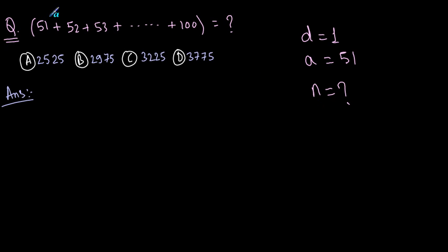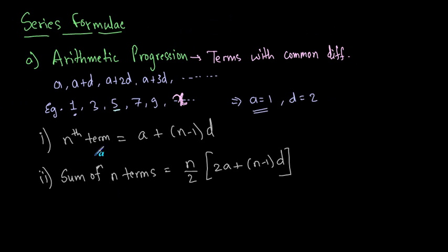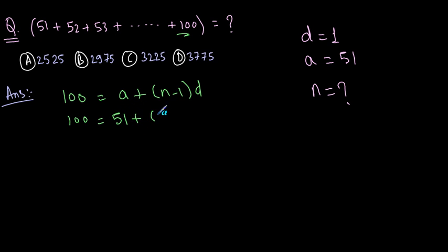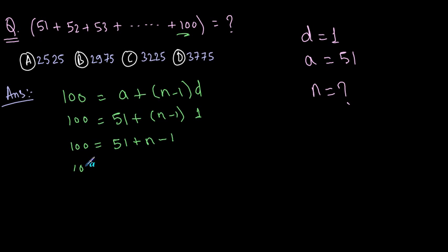To calculate how many terms are in this series, use the nth term formula: nth term equals a plus (n minus 1) times d. The nth term — the last term — is 100. So: 100 equals 51 plus (n minus 1) times 1. Simplifying: 100 equals 51 plus n minus 1, which gives 100 equals 50 plus n, therefore n equals 50. So there are 50 terms in all.